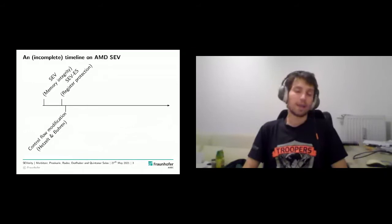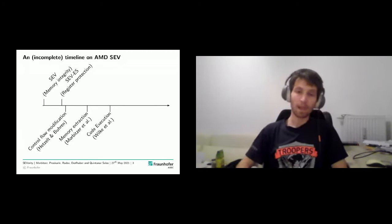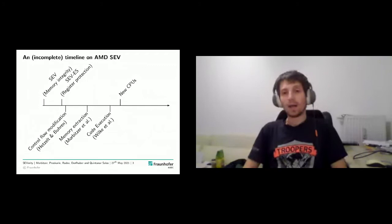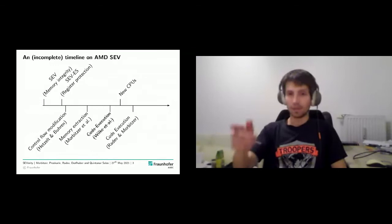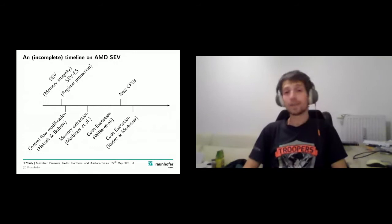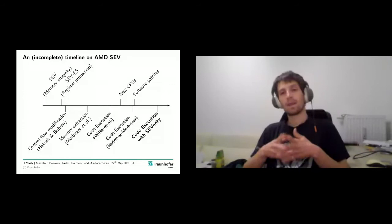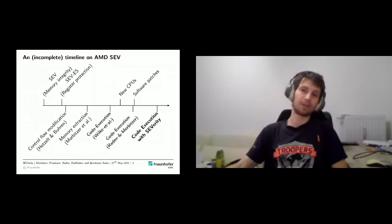Soon after those two were announced, we saw the first attacks on AMD SEV: a control flow modification attack, then a memory extraction attack, and then a code execution attack. AMD then released new CPUs fixing that code execution issue, but another code execution attack followed, which was resolved by software patches. What I want to present today is a new code execution attack — which we call SEVERITY.